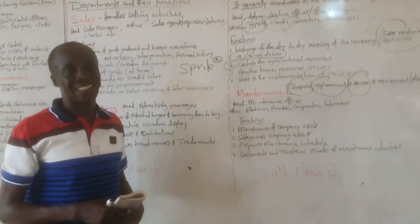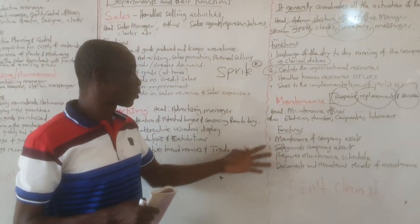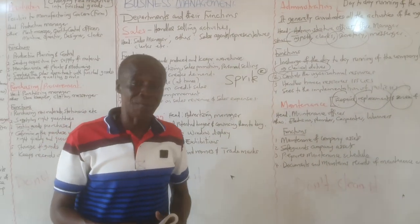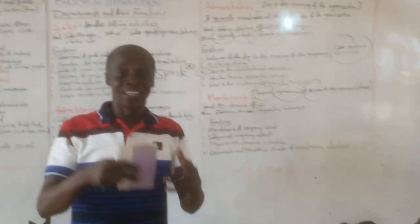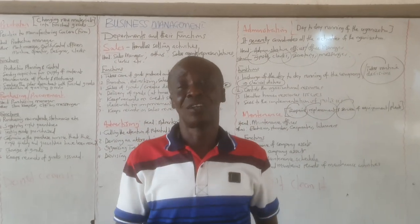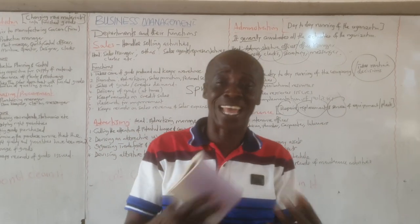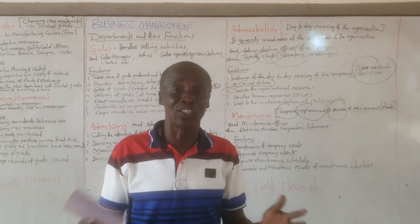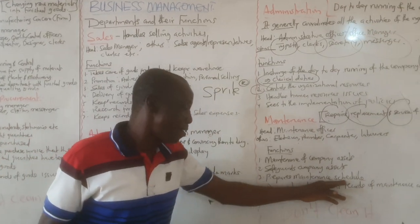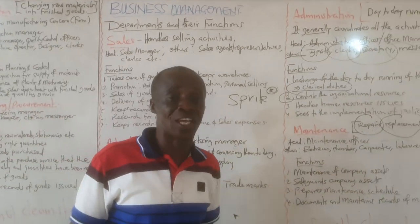The functions of the maintenance department are: number one, maintenance of assets; number two, safeguarding the company's assets by keeping them in safe condition — there may be rules regarding how assets should be kept; and number three, preparing maintenance schedules.